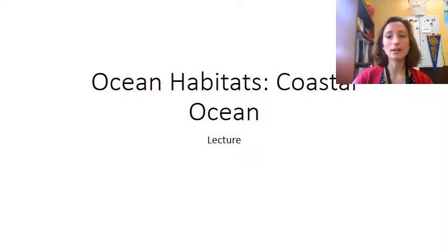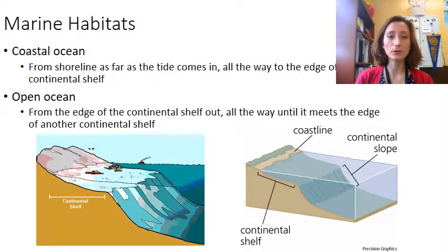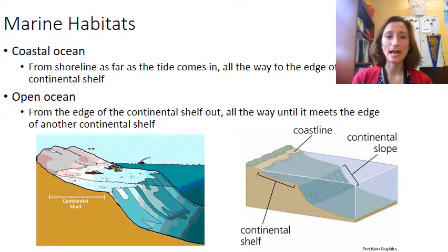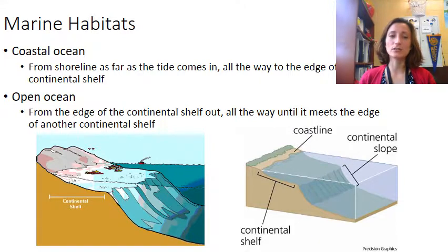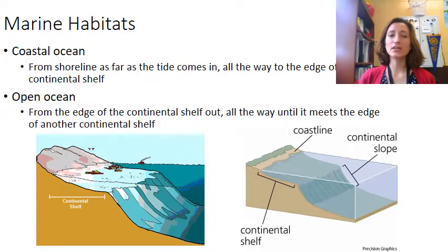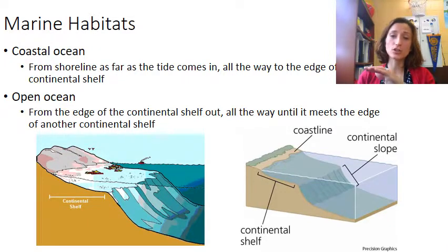We're going to start by talking about the coastal ocean. Marine habitats can be broken down into one of two different groups: either the coastal ocean or the open ocean. The coastal ocean — you can see on the pictures representing the topography of the land as it meets the ocean — includes everything from the shoreline as far in as the tide goes: from the highest point of high tide all the way to the edge of the continental shelf, just before it slopes down and meets the bottom of the ocean floor.